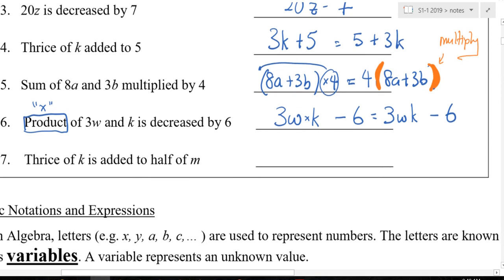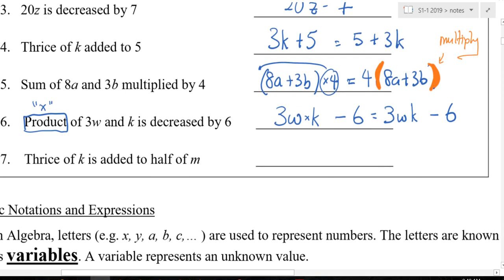Last one. Thrice of k added to half of m. Let's have... All of you are writing your answers. You are now checking the answer with 10n. 10n, where are you? 10n, what's the answer? 3k plus m over 2. Very good.